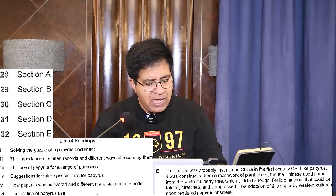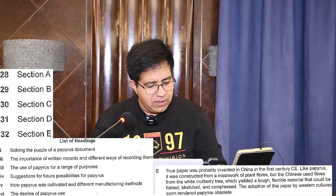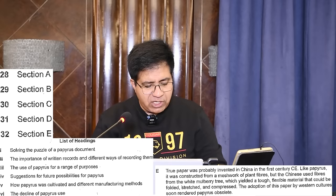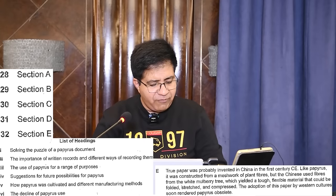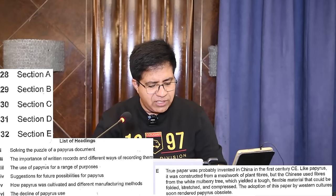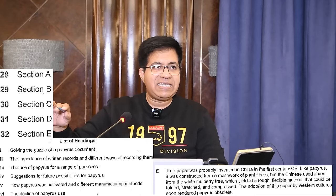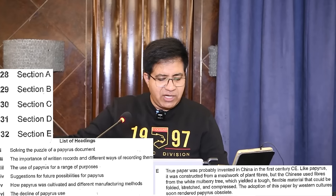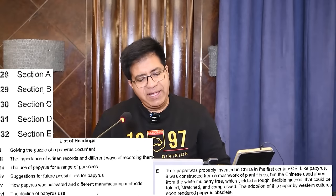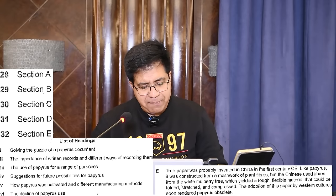Paragraph E: 'True paper was probably invented in China in the first century. Like papyrus it was constructed from a mesh of plant fibers, but the Chinese used fibers from the white mulberry tree, which yielded a tough, flexible material that could be folded, stretched, and compressed. The adoption of this paper by western culture soon rendered papyrus obsolete.' Obsolete means decline of papyrus — heading number six: 'Decline of Papyrus Use.' Correct answer for question 32, section E, is heading number six.